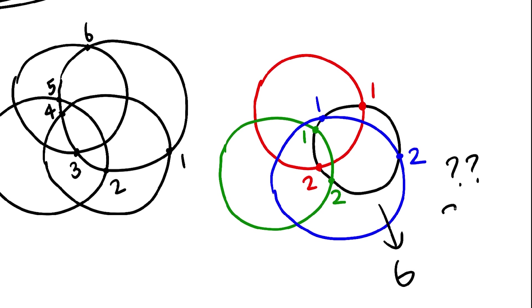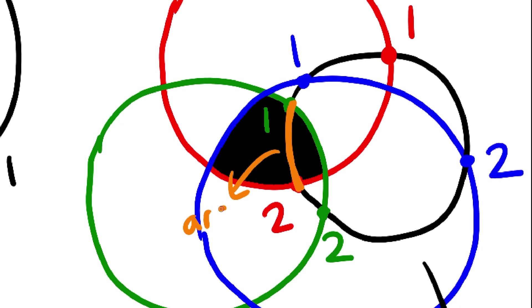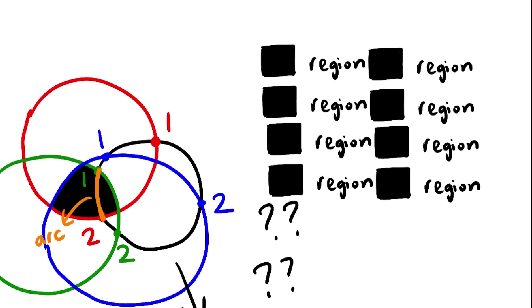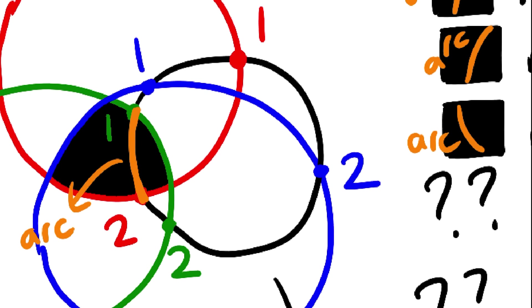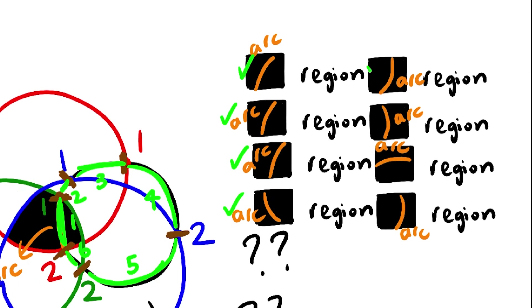We're trying to split 8 regions in half, not 8 points. But how do you split the regions? Using circular arcs. Meaning, if you have 8 regions, you need 8 arcs to split them all in half. But, if you go back to the intersection points, you'll notice that 6 points divide the circle into only 6 arcs, no more. Meaning we can only split 6 regions in half, not 8.